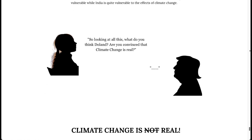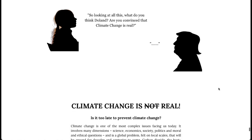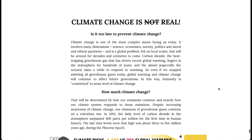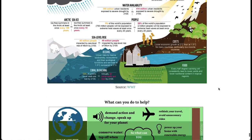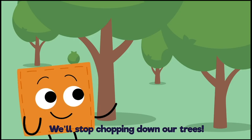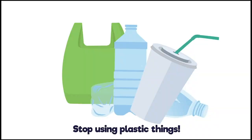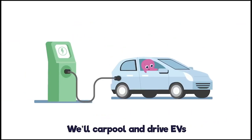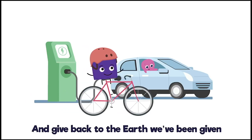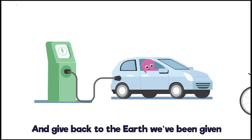At the end of this conversation, Goethe might not be able to convince Dorland, but we hope that you are convinced that climate change is real. Here are a few things that you can do to help: stop chopping down our trees, stop using plastic, and carpool and drive EVs to give back to the earth we've been given.